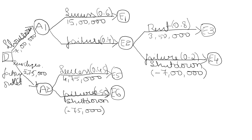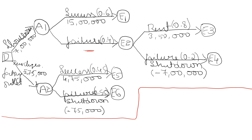The diagram is now done. The only thing remaining is to find the failure amount at E2. We will calculate total payoff for E3 and E4 to determine that value. For E1: 15,00,000 × 0.6. For E2, we must wait. For E3: 3,50,000 × 0.8. For E4: minus 7,00,000 × 0.2. Based on E3 and E4 calculations, we will find the value for E2.